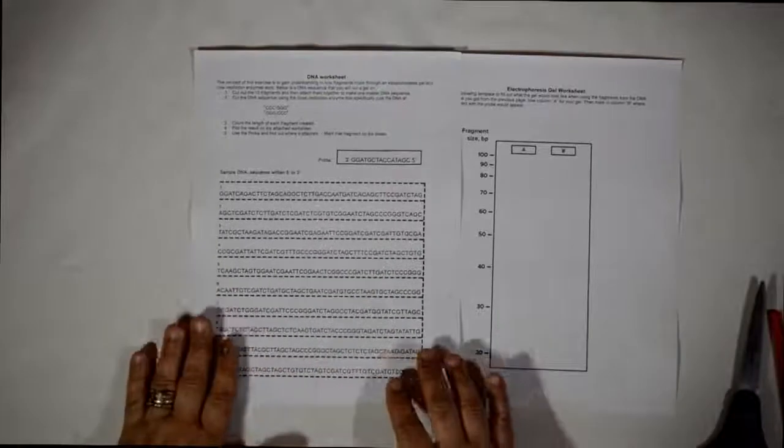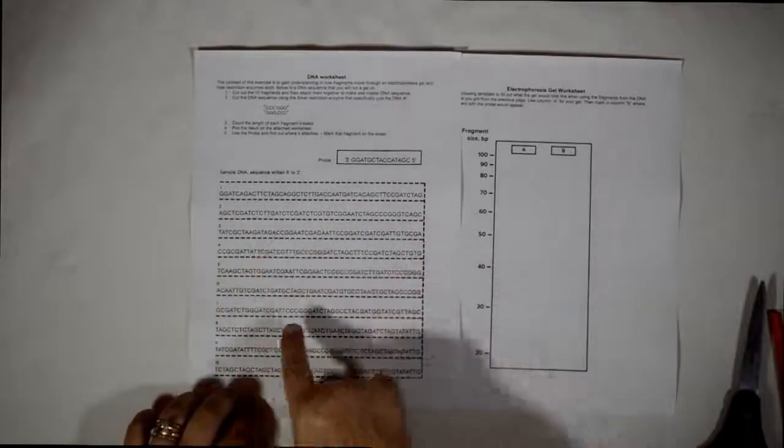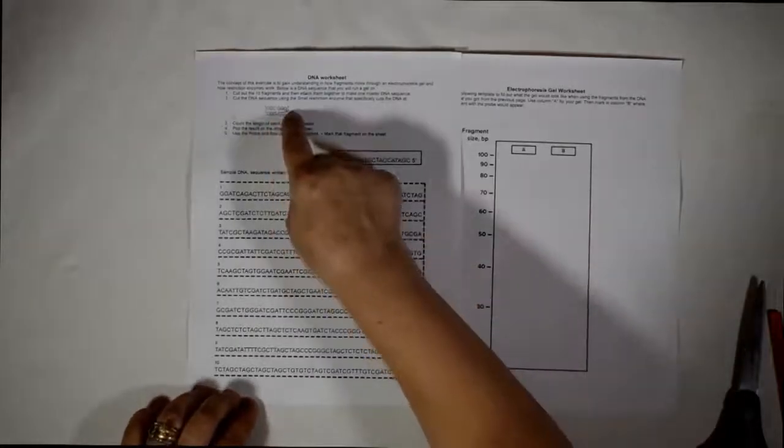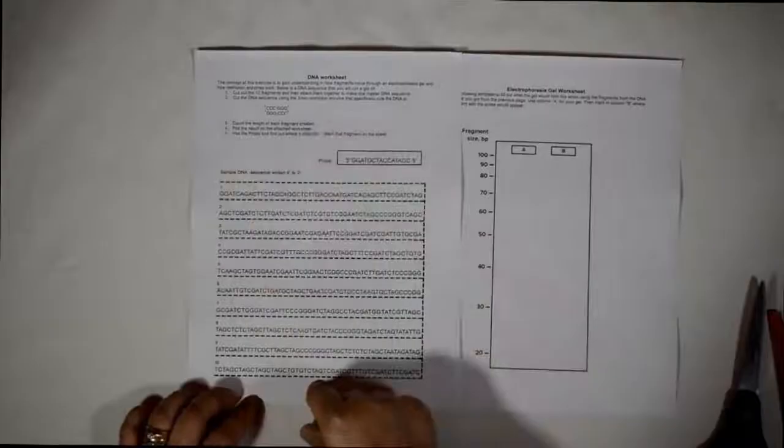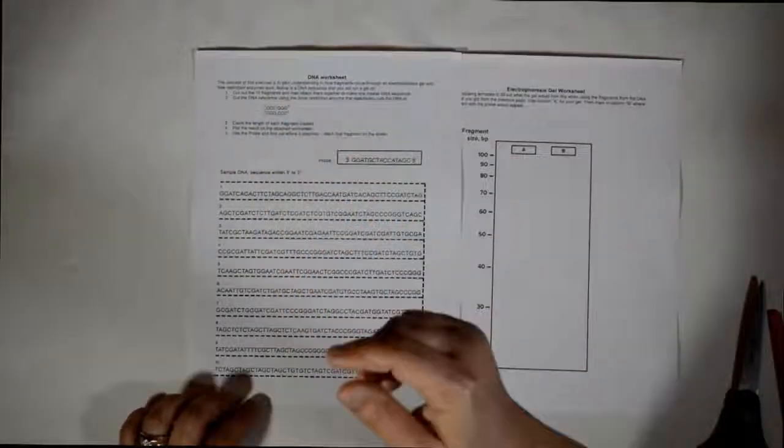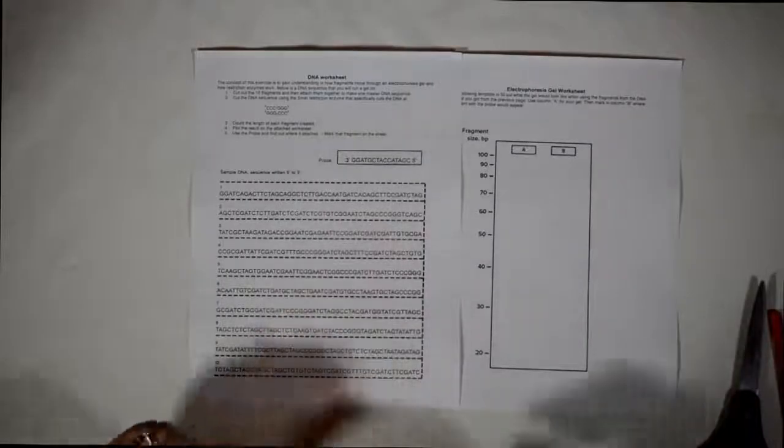First of all, you have here the DNA sequence that you're going to be running on this gel and here is the restriction enzyme that you will work with CCCGGG and where it cuts is right in the middle of CCCGGG.